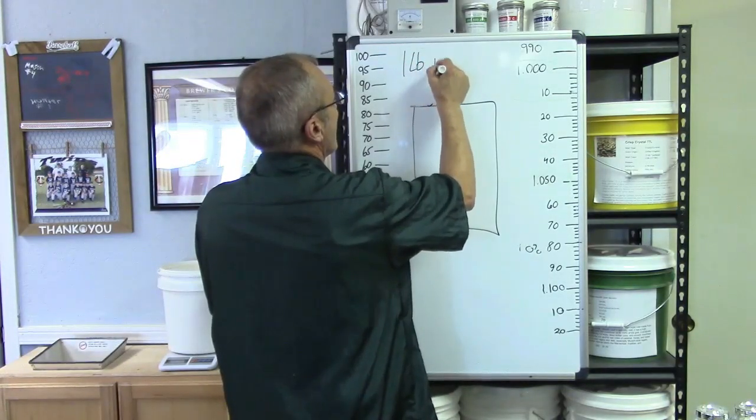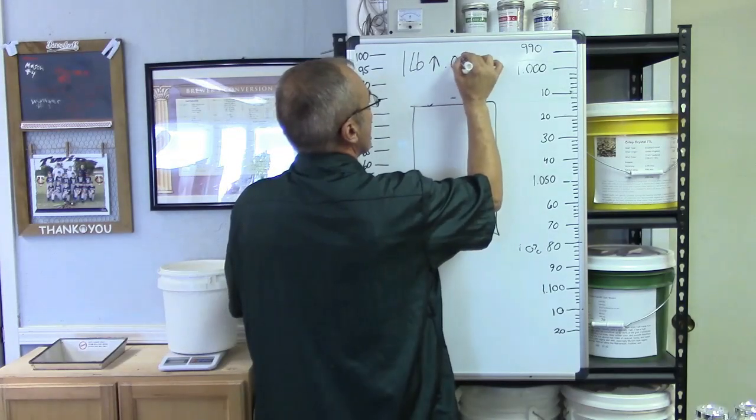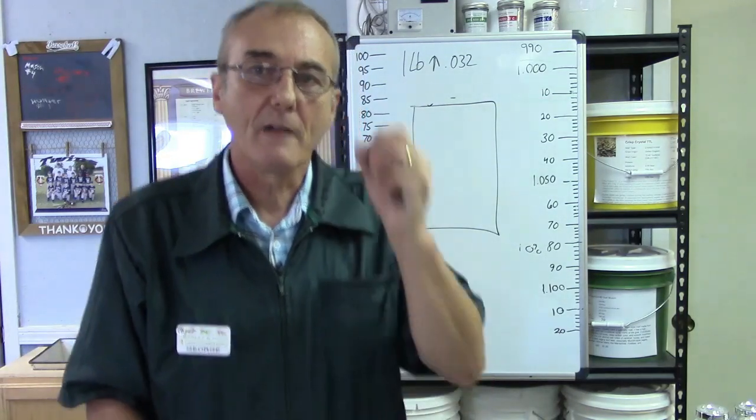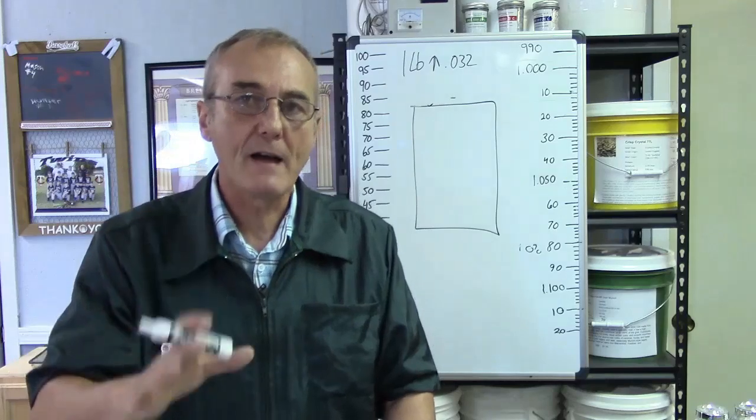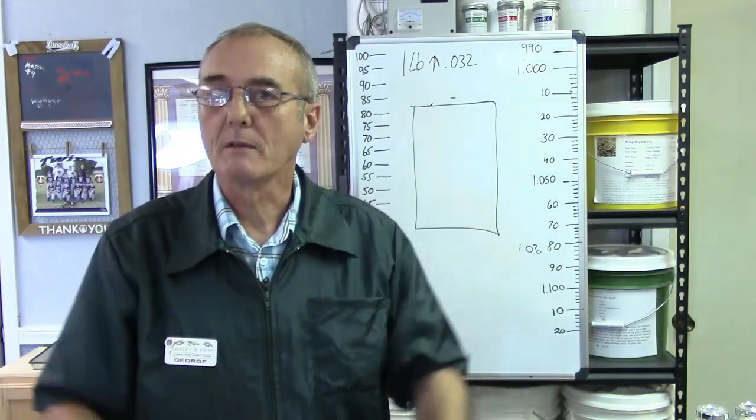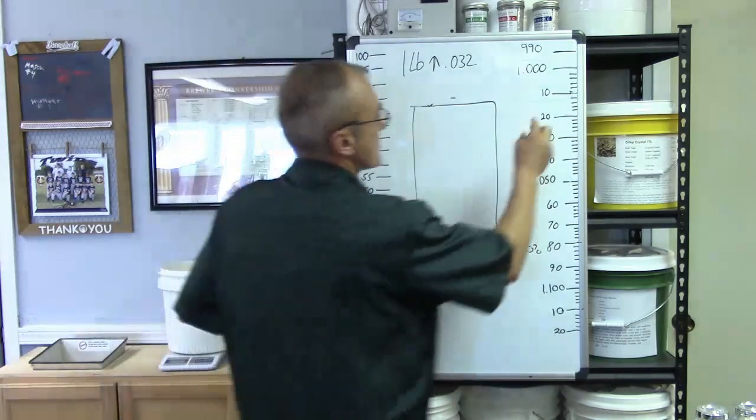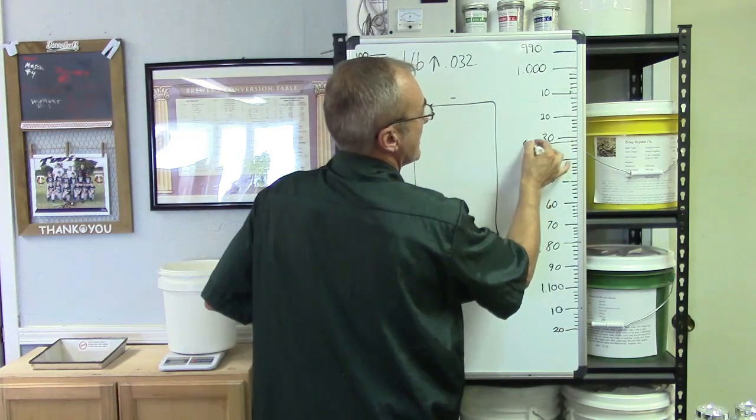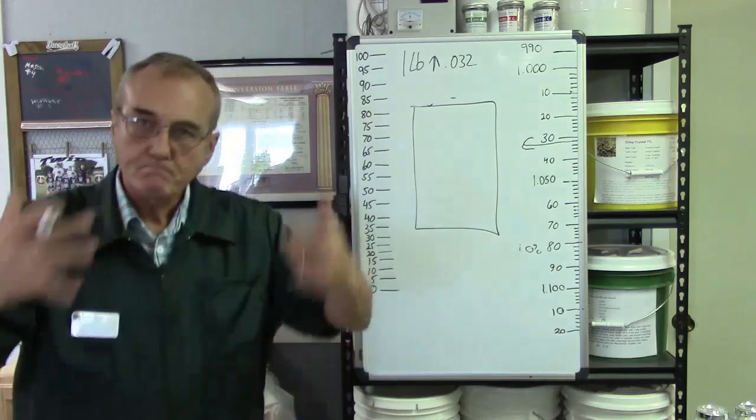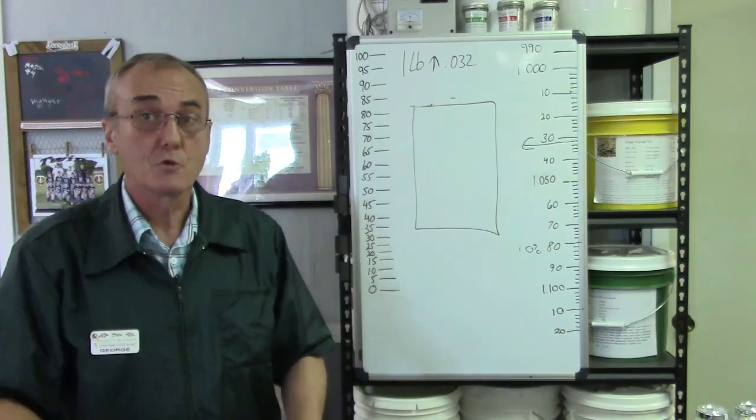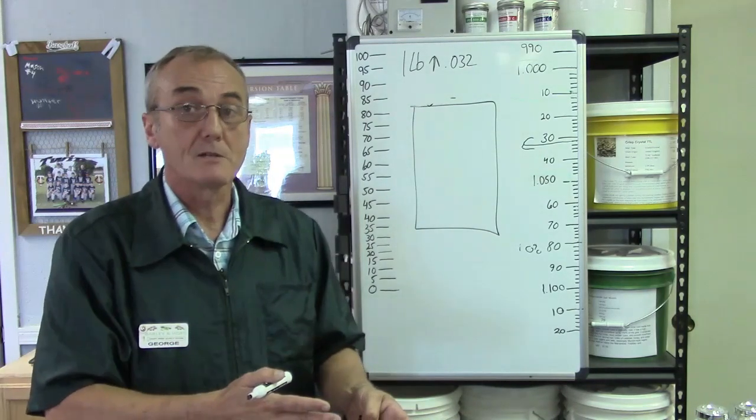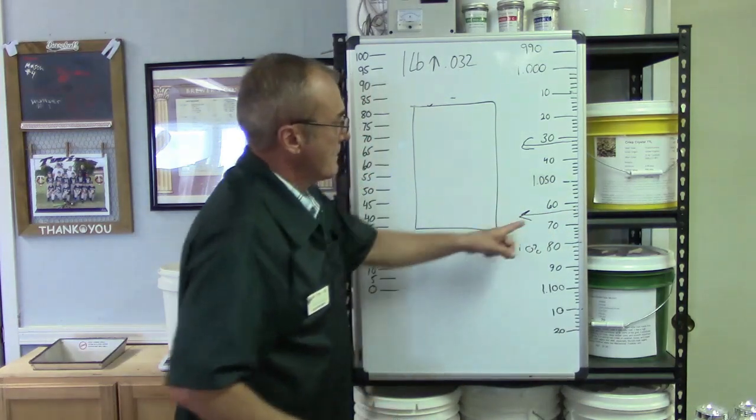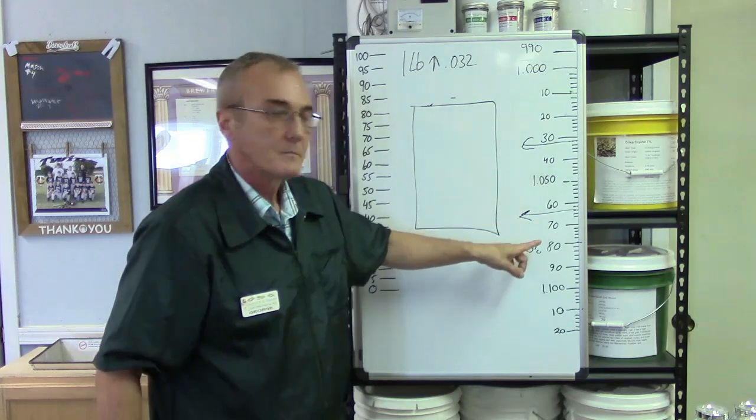One pound of sugar will raise the gravity points 5.032 per pound per gallon. So if I had five pounds of sugar in five gallons of water, it would be 32 gravity points - my hydrometer should float at 1.032. If I put two pounds per gallon, which would be ten pounds of sugar in five gallons of water, then it would be 64 - my hydrometer would float at 1.064.